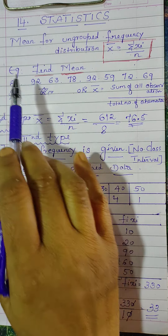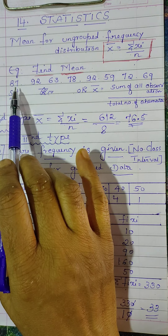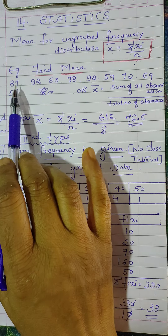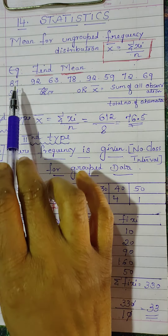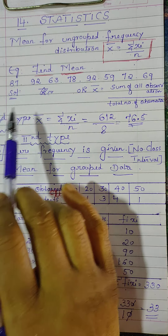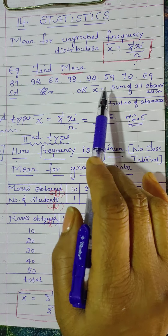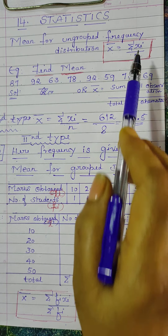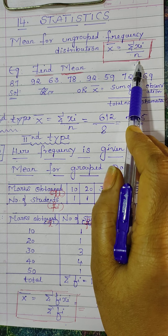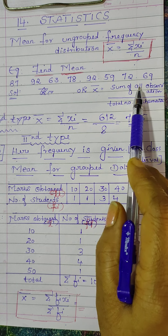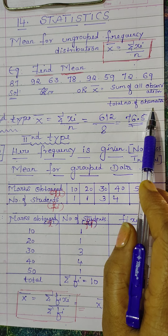Now along with an example I will explain how to find the mean of the distribution. I have given some values — marks from 87 to 69, total 8 values. Now you have to find the mean. Mean x̄ is equal to Σxᵢ / n. Otherwise you can write: sum of all observations divided by total number of observations, but that is lengthy, so always use x̄ = Σxᵢ / n.